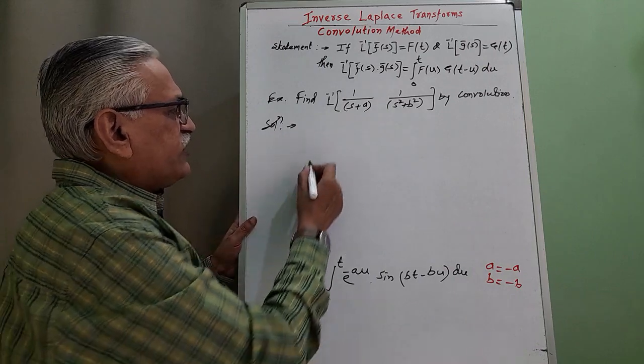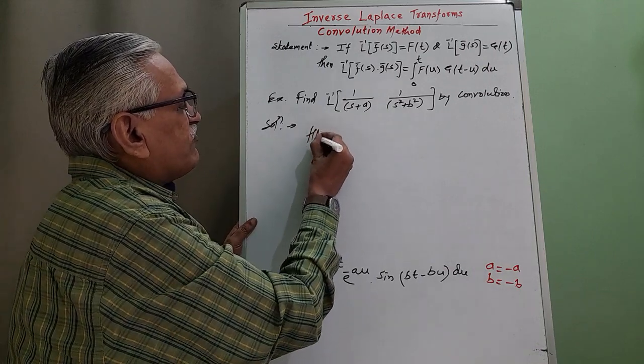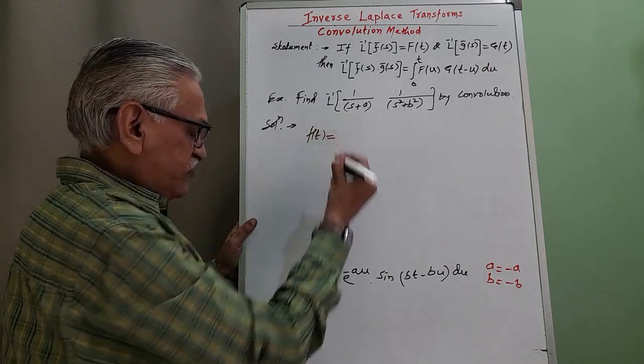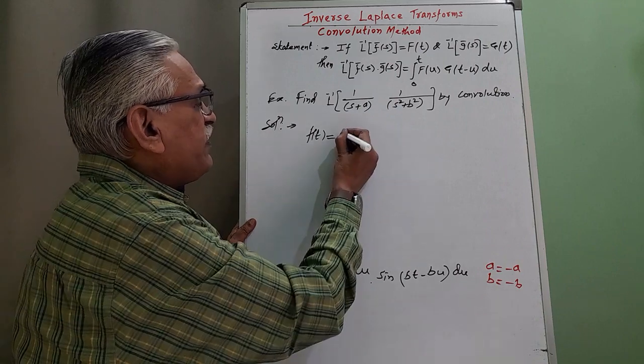Inverse of this given problem is suppose f of t. Therefore, on left hand side we have that f of t and it is equal to 1 by b.